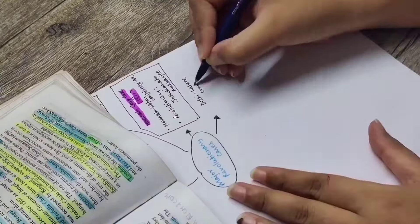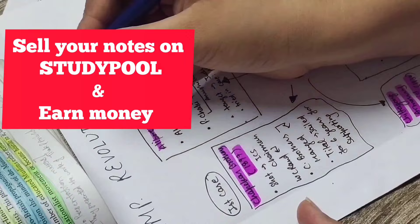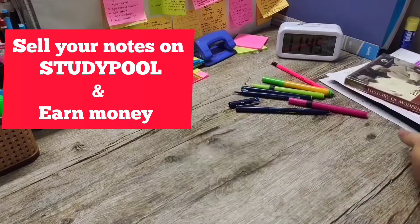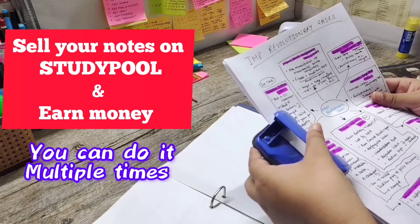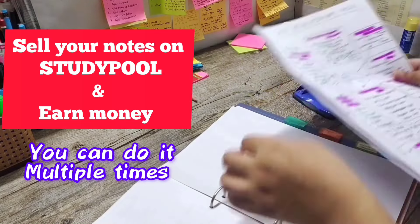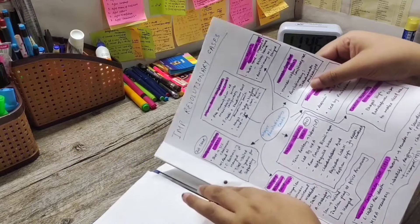You just sell your prepared notes on Study Pool. Per document, you can earn up to ten dollars, and the best part is a single document can be sold multiple times, so there's no limit to your earnings. Let's see what Study Pool is and how it works.